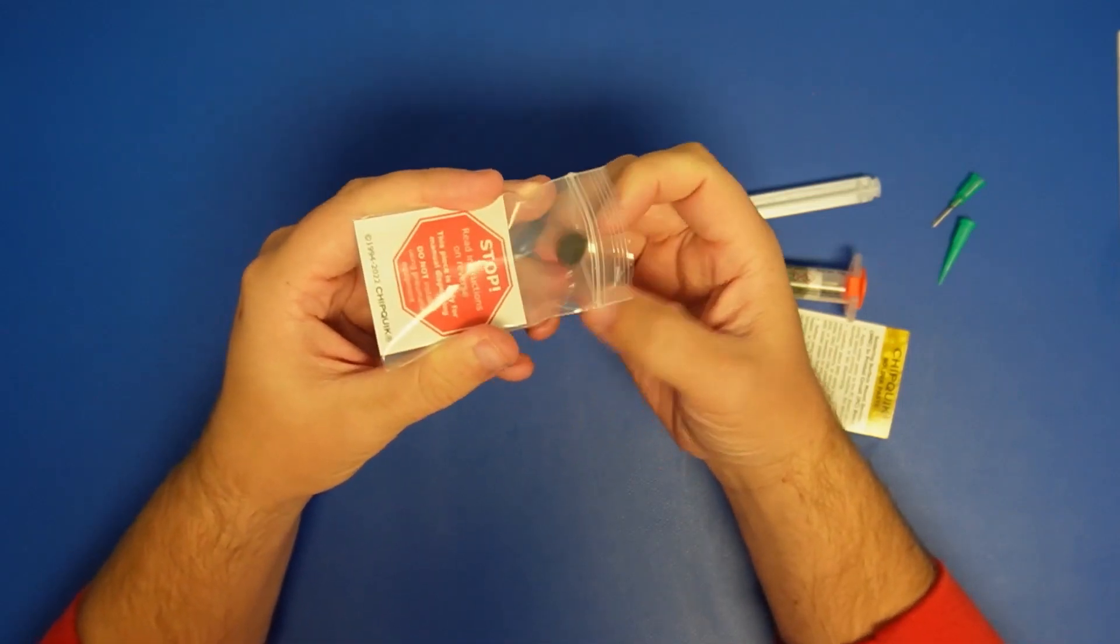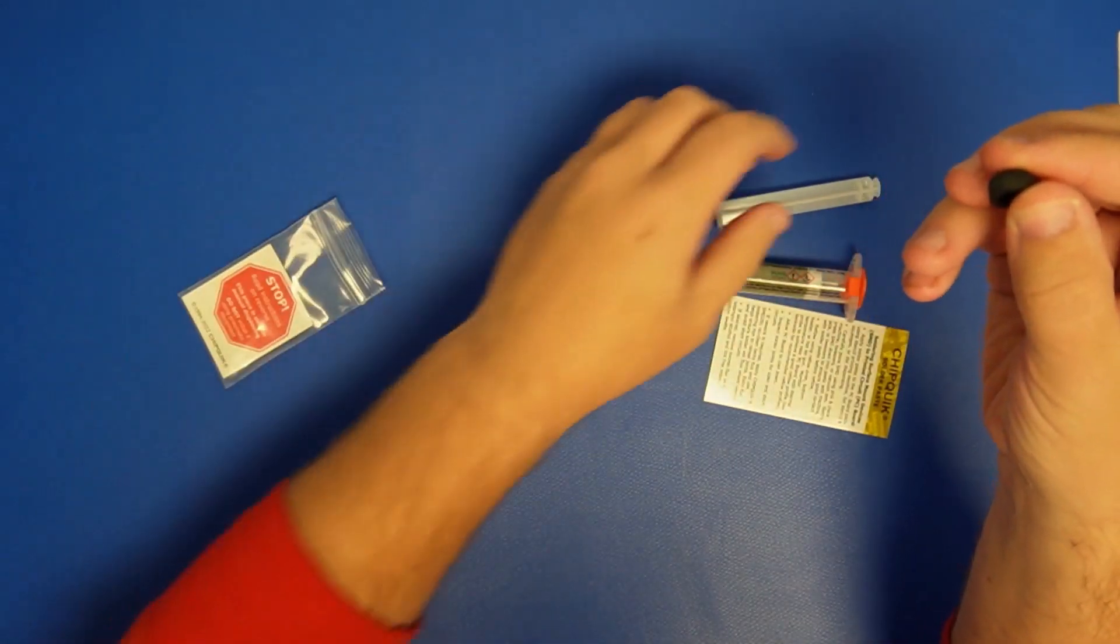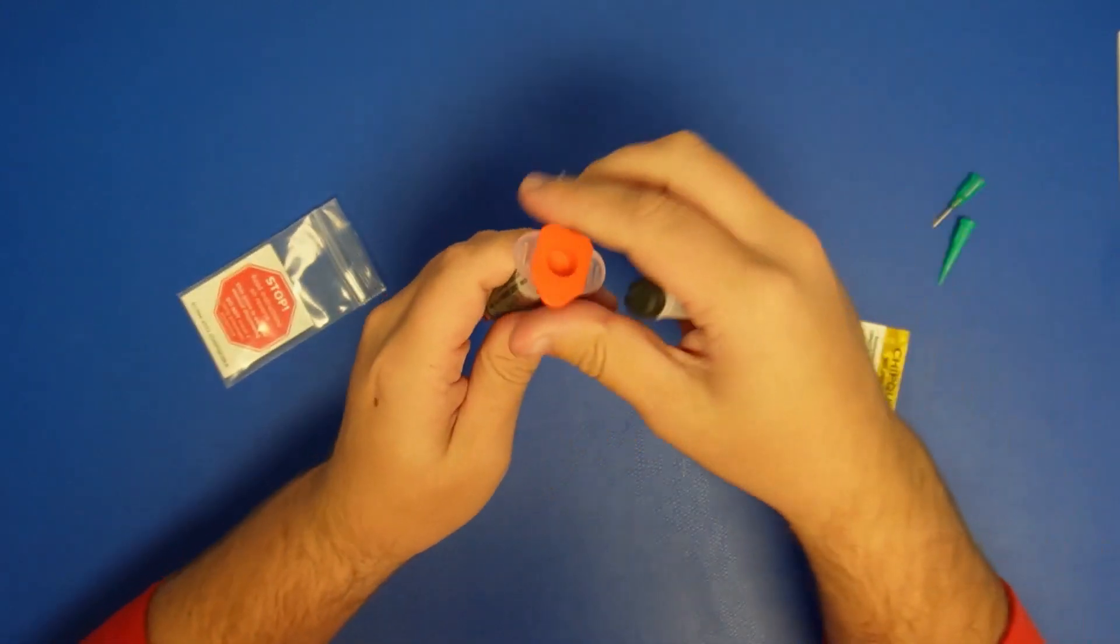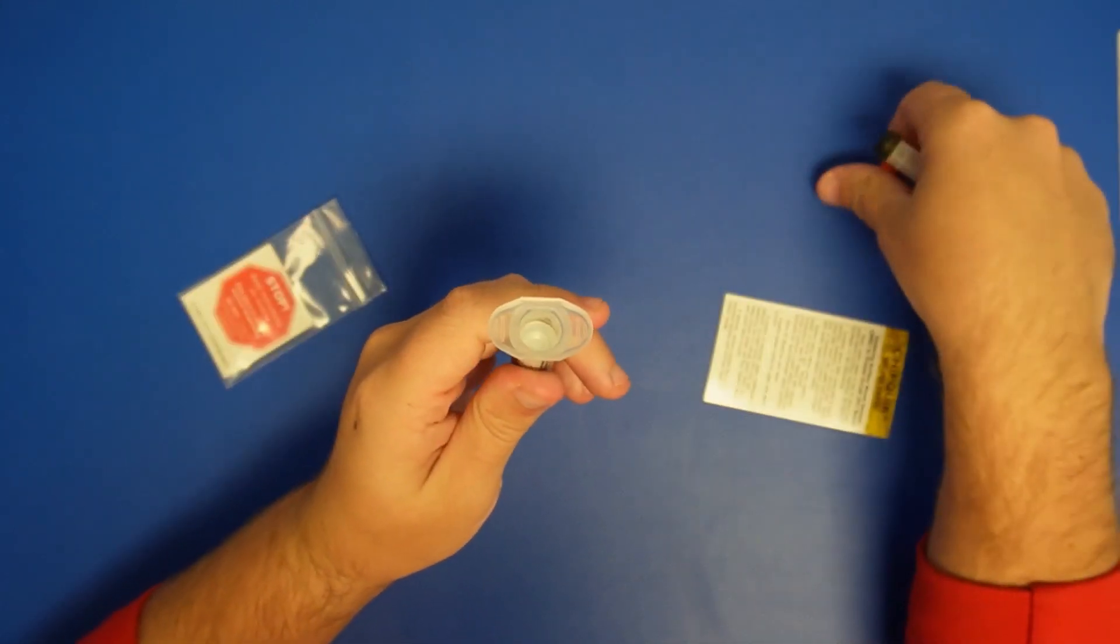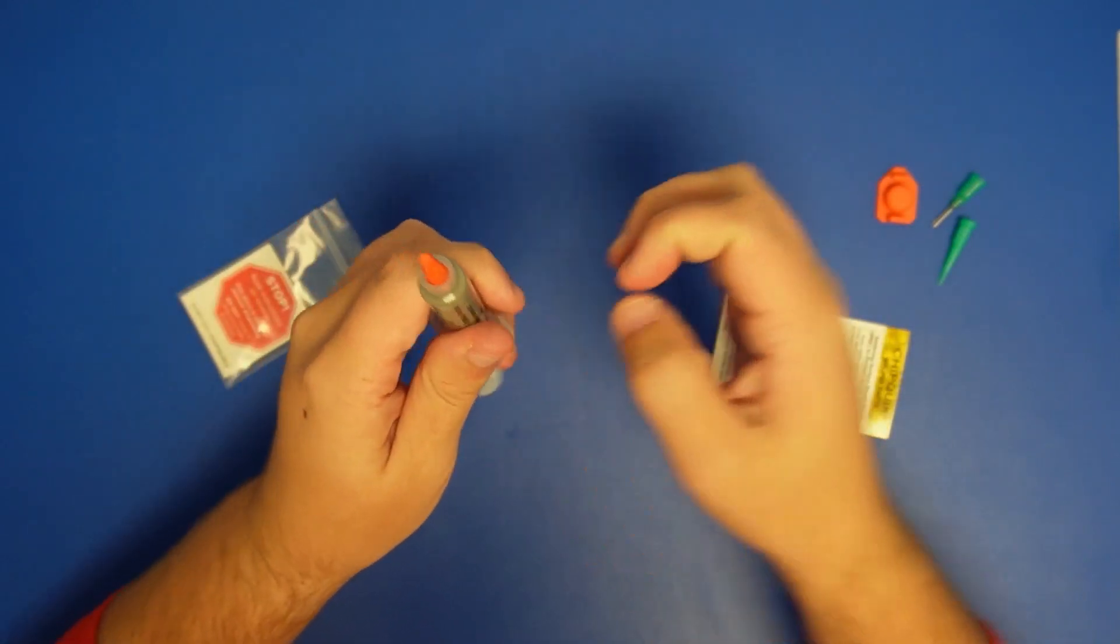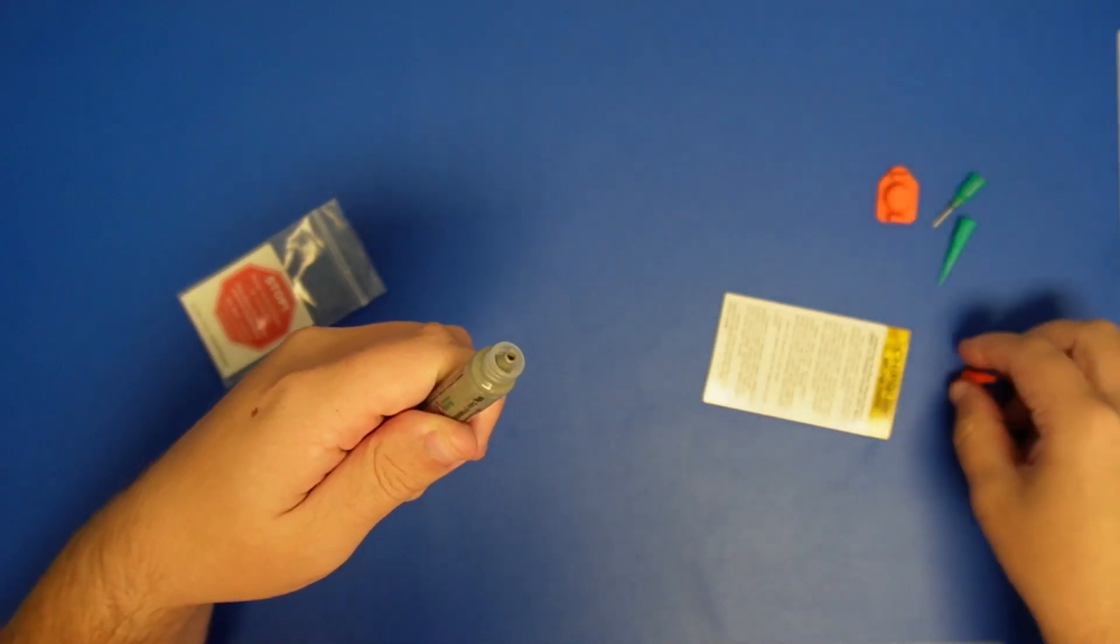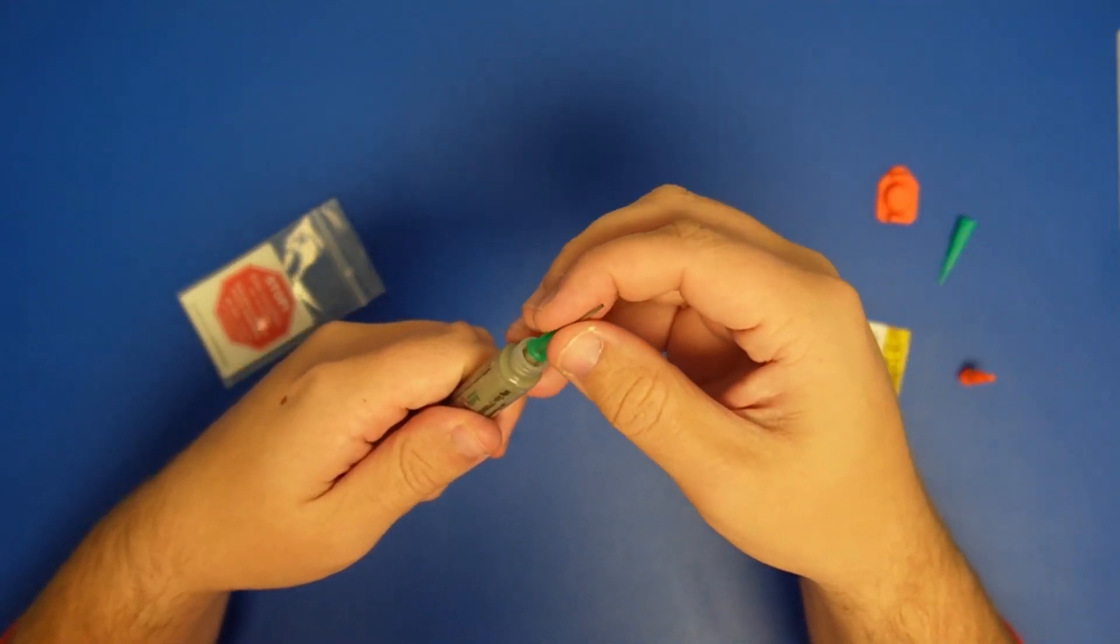You want to take your plunger stopper out, put it on top of the plunger, take the lid off of the syringe, put it underneath, take the top of the syringe off and put the needle on.